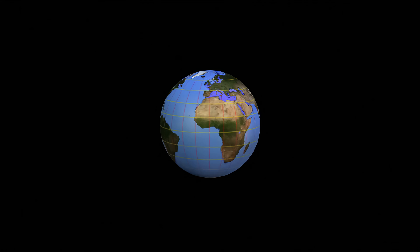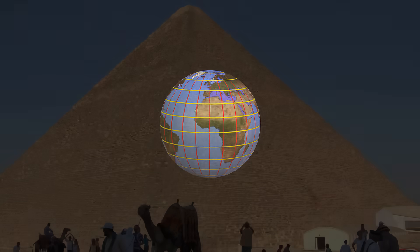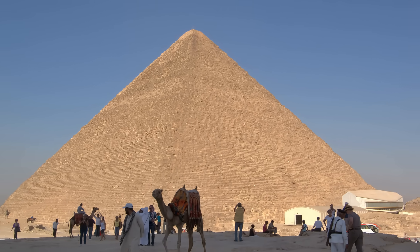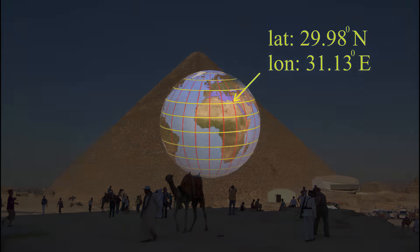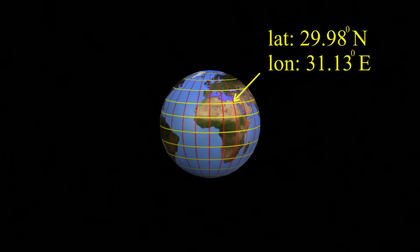Intersecting lines of latitude and longitude define a location. For instance, the Great Pyramid at Giza is located at latitude 29.98 degrees north, longitude 31.13 degrees east.